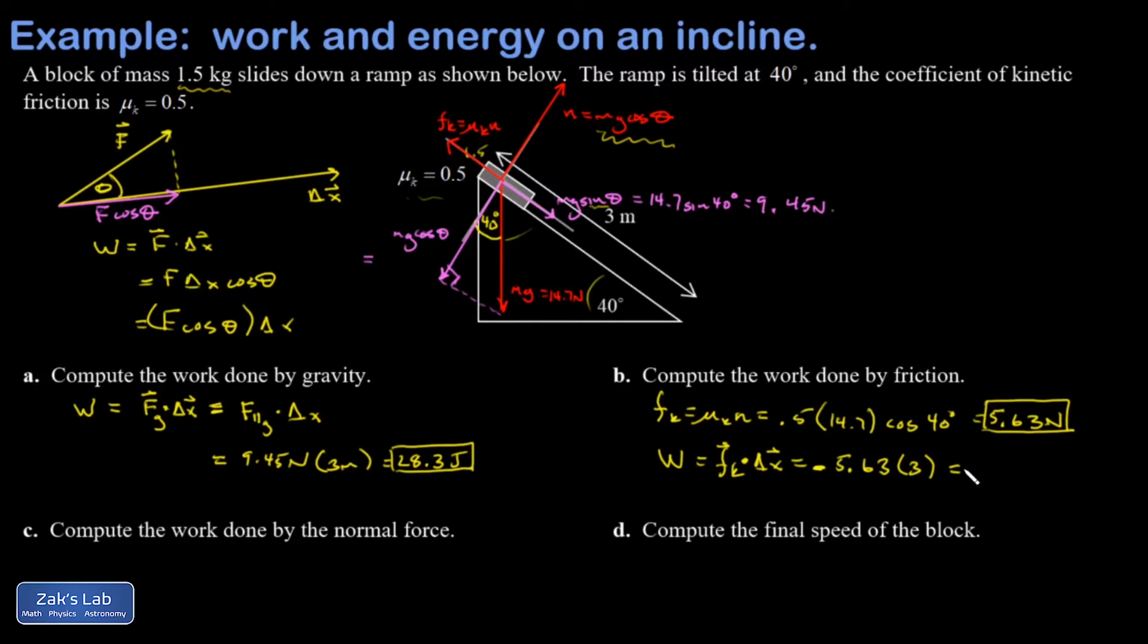All right, so as you might expect, friction is sucking energy out of the system. So I get negative 16.9 joules if I run to three sig figs. Okay, next, compute the work done by the normal force.